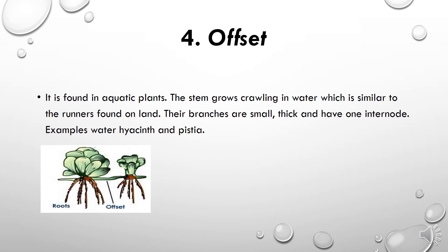Offset: flowering plants in water that are similar to runners found on land. Their branches are small and thick, and they have internodes. Examples are water hyacinth and Pistia. Water lily is also an example having the offset type of stem.